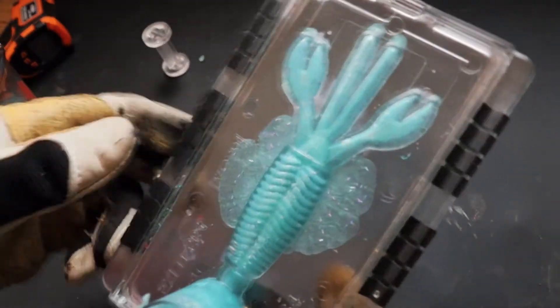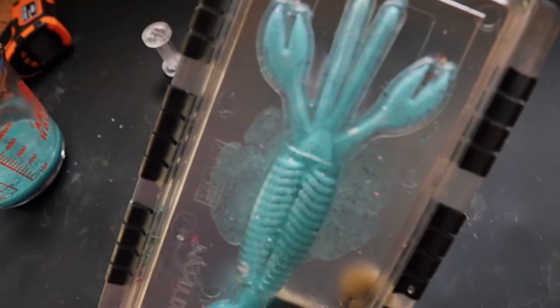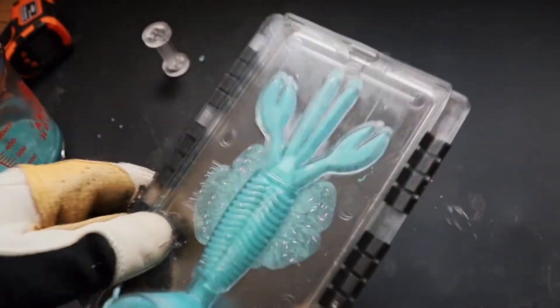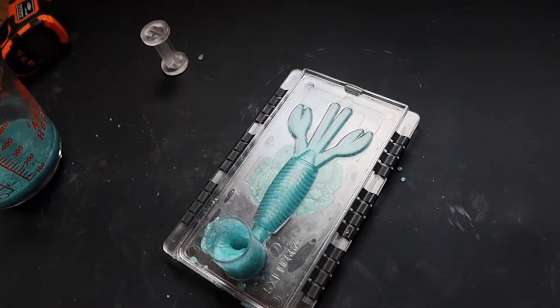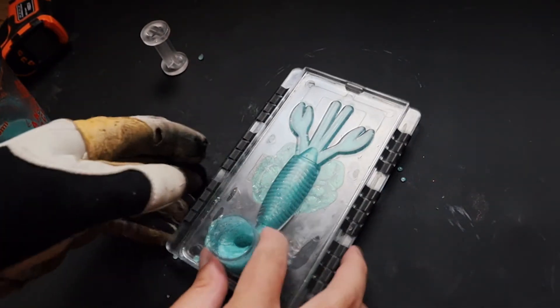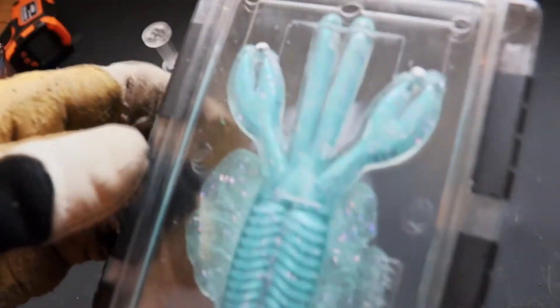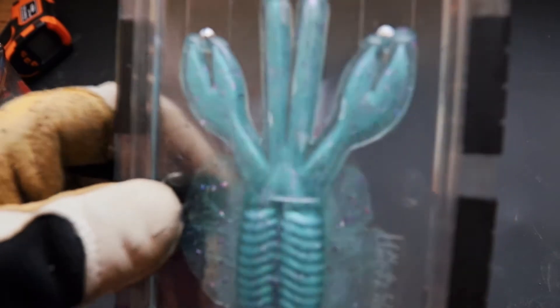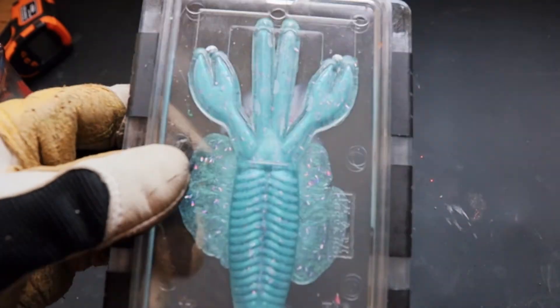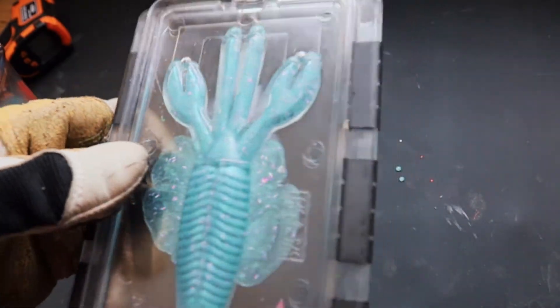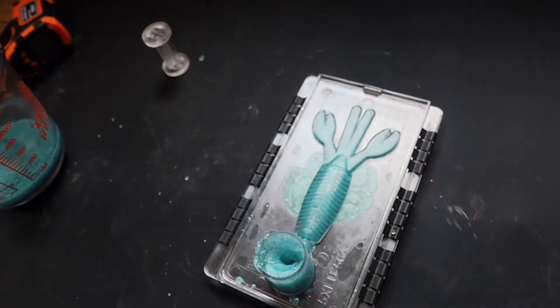I guess we can at least take a look at it while it's in the mold, but it looks pretty good. I need to take the gloves off because it's hard for me to focus on the camera touching the screen. I think it almost needs some black flake, but that's just me. That's going to be a lot easier to look at outside the plastic. Well, it's still pretty hot, so I'll let it cool down for a little bit.